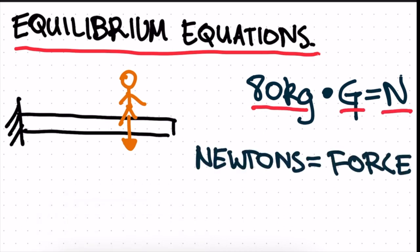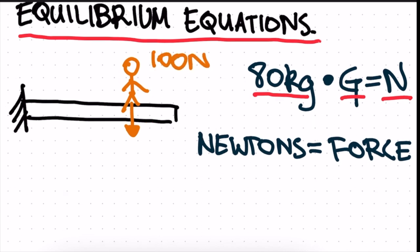Let's say this guy weighs 100 units — roughly 100 kilograms, so 100 newtons. If this guy is standing on this beam, we're going to have our reactions. We have a reaction here, a reaction here, and a reaction here, for a fixed condition.